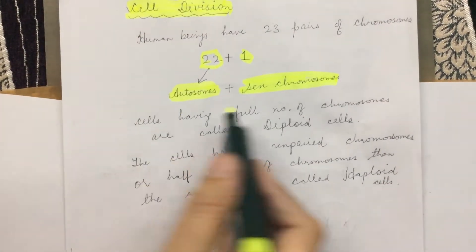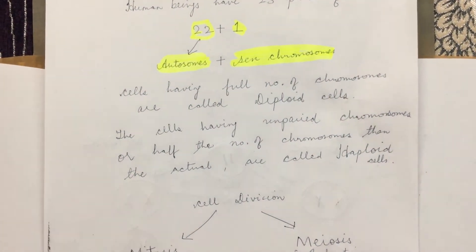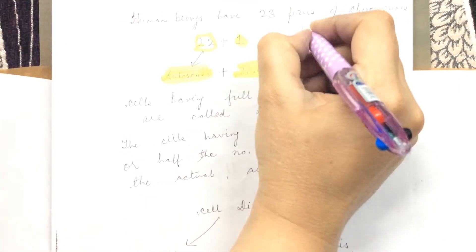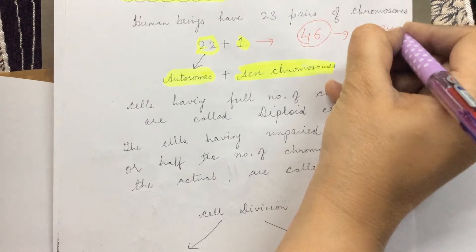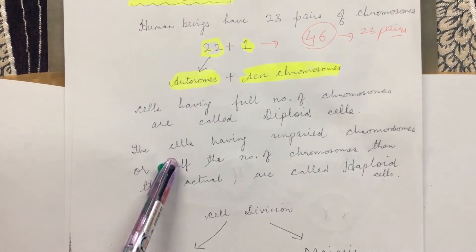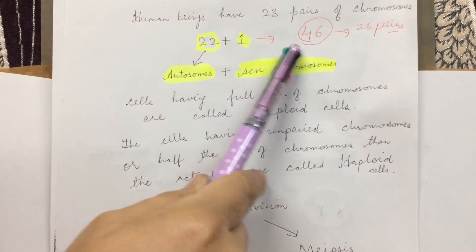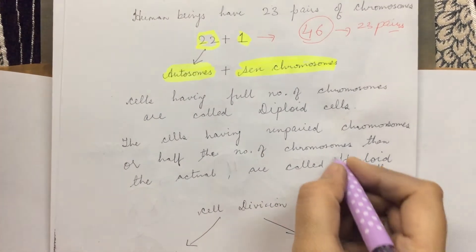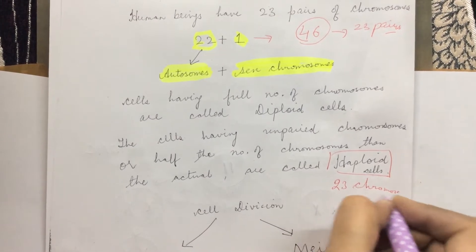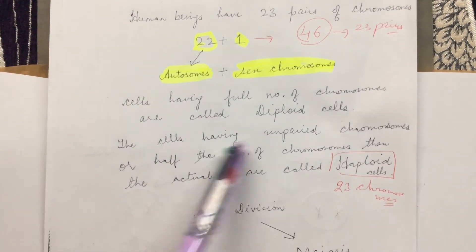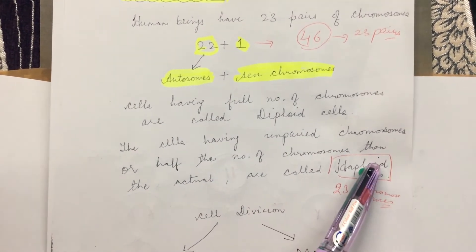Cells having the full number of chromosomes — that means 23 pairs or 46 chromosomes — are called diploid cells. Cells having unpaired chromosomes or half the number of chromosomes are called haploid cells. In case of human beings, the haploid cell will have only 23 chromosomes — not 23 pairs, but just 23 chromosomes.